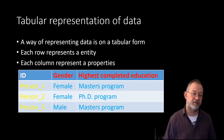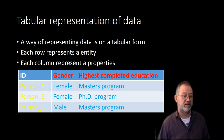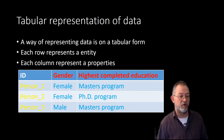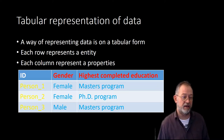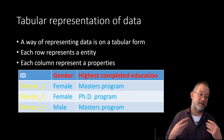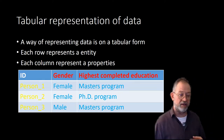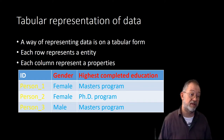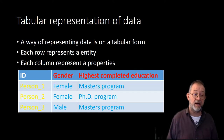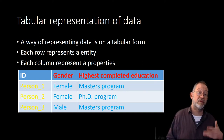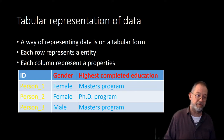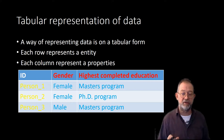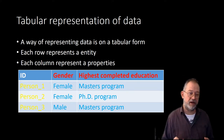The classical way of representing data is of course in tabular form, where each row represents an entity. So person one is a female with a master's program, person two is a female with a PhD as highest completed education, and person three is a male with a master's program. That's the classical way of presenting data — we'll come back to that shortly.